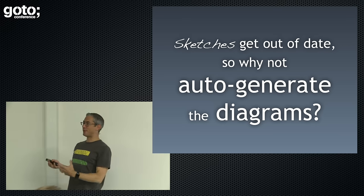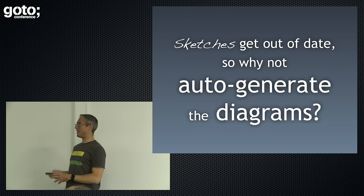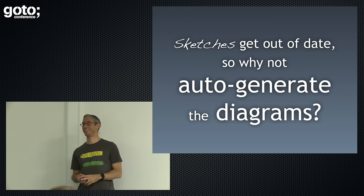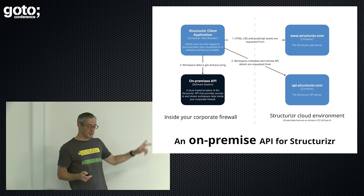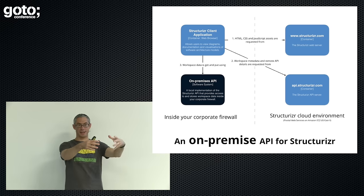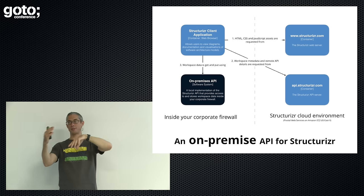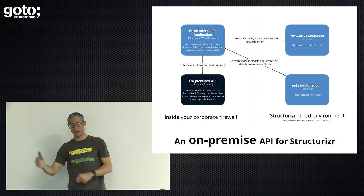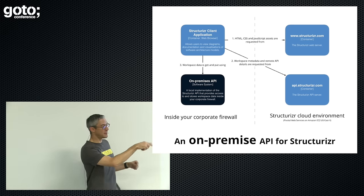If I have an existing code base, why can't I just auto-generate diagrams? What happens when you try this? You just get chaos. Is that because your code base is chaos? Sometimes — but often not. Often it's just showing too much detail. Structurizer is all cloud-based, and lots of potential customers like it, but they don't want to send their software architecture models up to the cloud. So I built a very simple on-premises API.